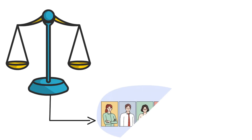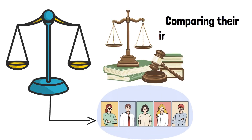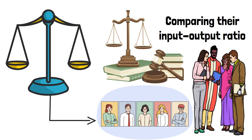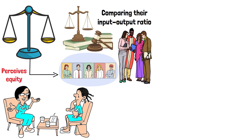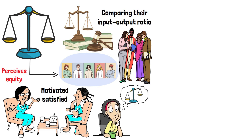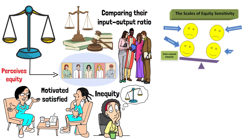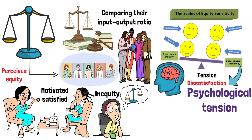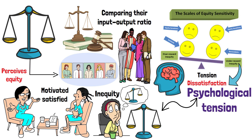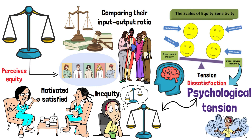The theory suggests that employees assess fairness by comparing their input-output ratio with that of their peers. If an individual perceives equity, they are motivated and satisfied. However, feelings of inequity — whether under-rewarded or over-rewarded — lead to tension and dissatisfaction. This psychological tension drives the individual to restore balance, underscoring the fundamental role of perception in determining motivation and productivity.